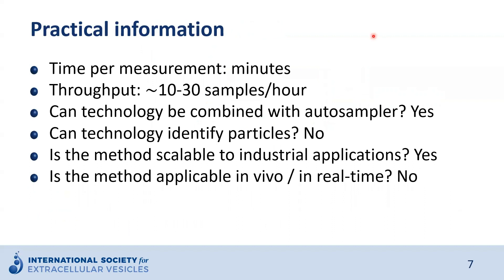Some practical information summarized: the time per measurement is in the range of minutes. Throughput, depending on your experimental design, instrument, and sample type, can be roughly 10 to 30 samples per hour. The technology can be combined with auto-samplers or plate readers if your flow cytometer is equipped with one. The technology cannot identify single particles. The method is scalable to industrial or high-throughput applications, and the method is not applicable for in vivo or real-time measurements.